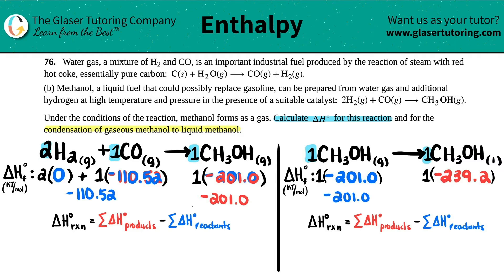And then these numbers would be the same as well: negative 201.0 and negative 239.2. Now I'm ready to do my formula. Delta H for the whole reaction is just products minus reactants. In this example it would be negative 201.0 minus negative 110.52.